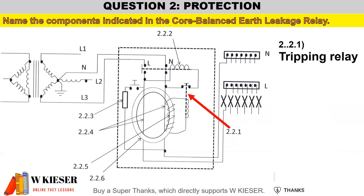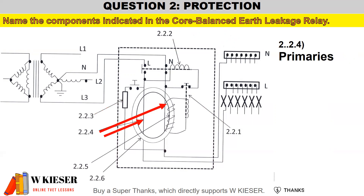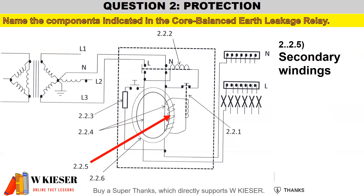The first part is the tripping relay. The second part is the tripping coil. The third part is the test circuit. The fourth part are the primaries — in other words, the live and the neutral. Five is the secondary windings, which makes up the current transformer. And then we have the laminated iron core, which also makes up the current transformer.